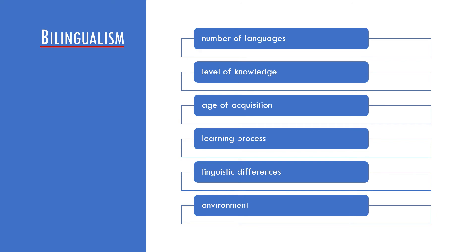Very important for psycholinguistic research are the differences between languages. They can be relatively small, such as between Czech and Polish or between English and French, but they can be very big, such as between English and Japanese for example.